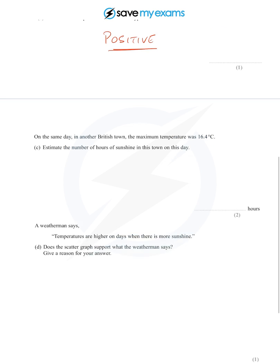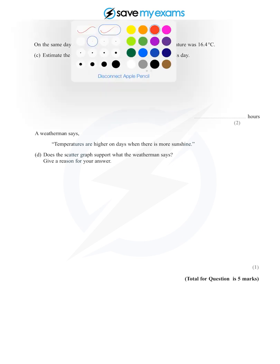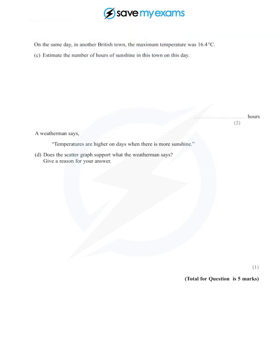Now questions over the page. On the same day in another British town, the maximum temperature was 16.4 degrees. Estimate the number of hours of sunshine in the town on this day.